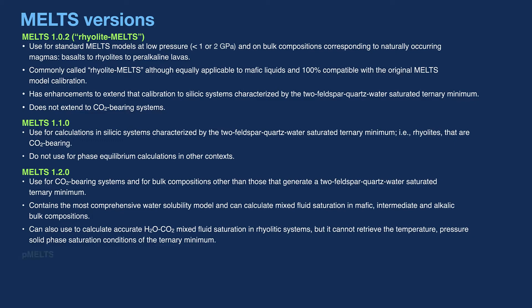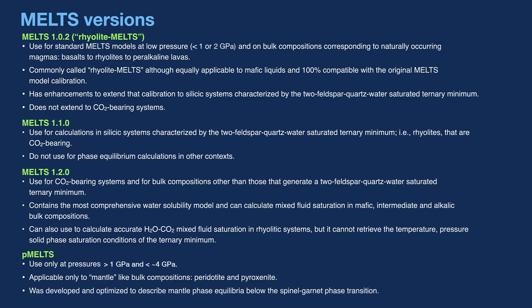The P-MELTS model should only be used at pressures greater than 1 gigapascal and less than about 4 gigapascals. It is only applicable to mantle-like bulk compositions — that is, peridotite and pyroxenite. The P-MELTS model was developed and optimized to describe mantle phase equilibria below the spinel-garnet phase transition.